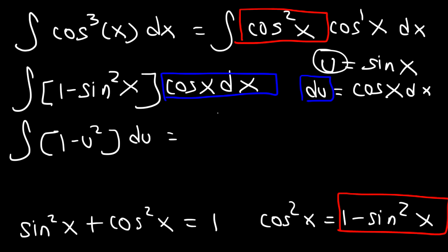The anti-derivative of 1 is u, and the anti-derivative of u squared is u to the third over 3, plus c.